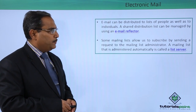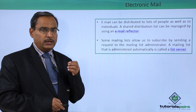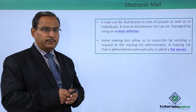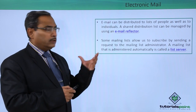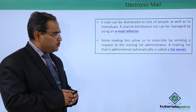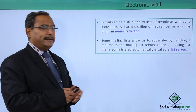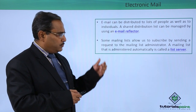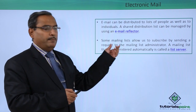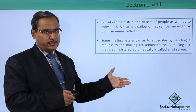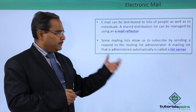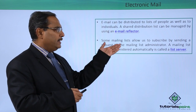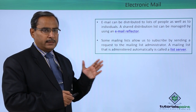Email can be distributed to a list of people as well as to a single individual. A list of people can be reached by sending a single mail to all of them in one shot, or we can send it individually. A shared distribution list can be managed by using an email reflector. Some mailing lists allow us to subscribe by sending mail to the list in one shot.